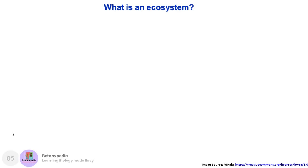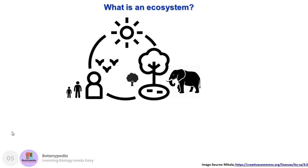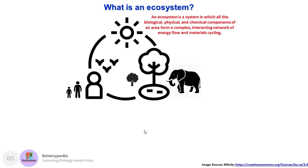An ecosystem is a system where all biological, physical, and chemical components form a complex interacting network of energy flow and matter cycling. There are two important things when studying an ecosystem in detail: how energy flows and how matter is recycled. Energy flow and matter cycling are the two core aspects of ecosystem functioning. This interaction is essentially happening in terms of energy flow and matter cycling.